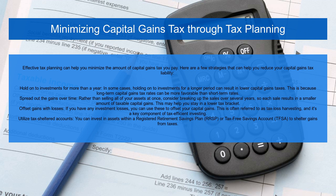Third, offset gains with losses. If you have any investment losses, you can use these to offset your capital gains. This is often referred to as tax loss harvesting, and it's a key component of tax-efficient investing.